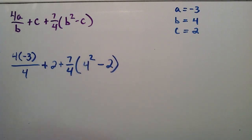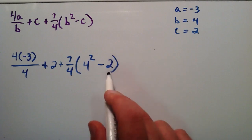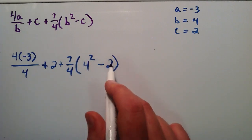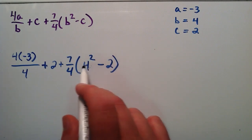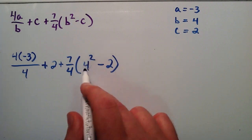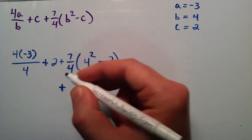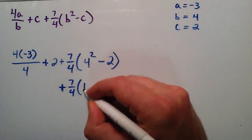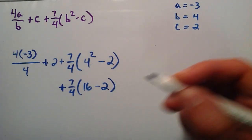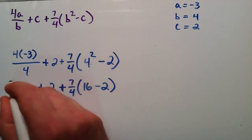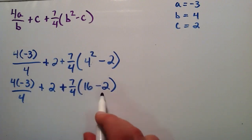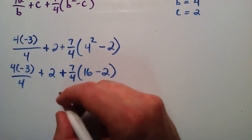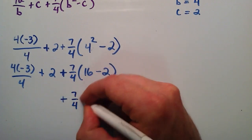Of all the operations we could perform, the most important to do first is the parentheses. Everything inside the parentheses has to be done first because of order of operations. Inside the parentheses we have an exponent and subtraction, so we do the exponent first. 4 squared equals 4 times 4, which is 16. So this last term becomes 7 over 4 times 16 minus 2. The first two terms stay the same, so I'll rewrite those. Now we finish what we started in the grouping: 16 minus 2 is 14, so the last term becomes 7 over 4 times 14.